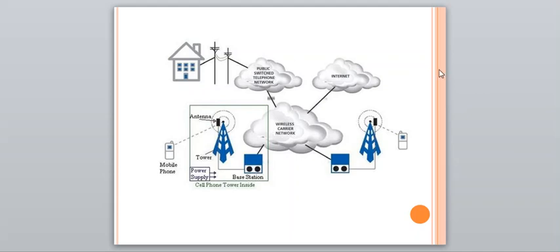So these are the inputs for the antenna. So starting with this public switch telephone network, it's a telephone network which connects worldwide. It includes the telephone cables, fiber optical cables, cable networks, all such things comes under the public switch telephone network.